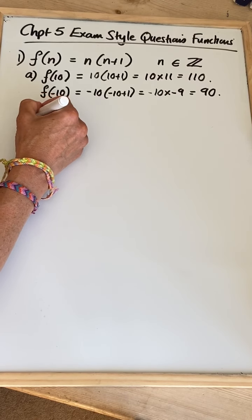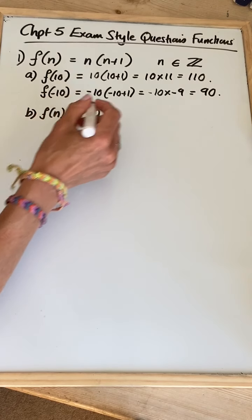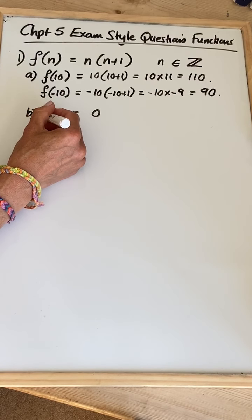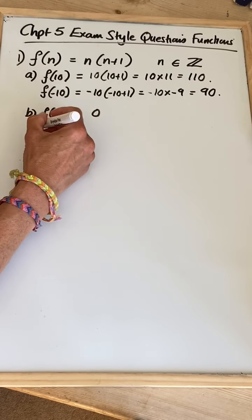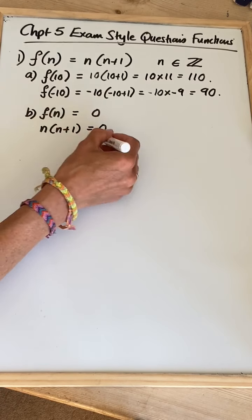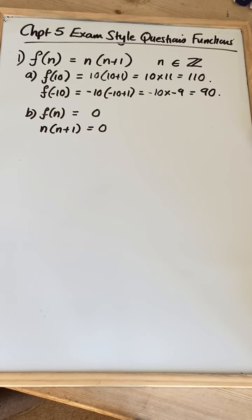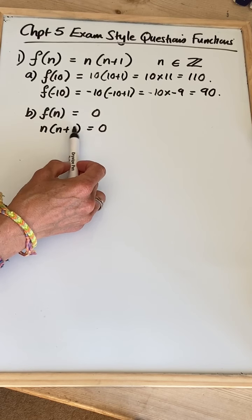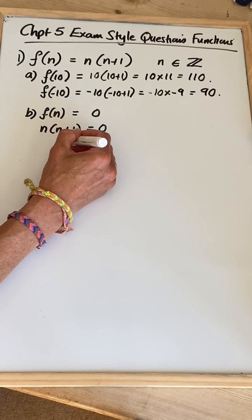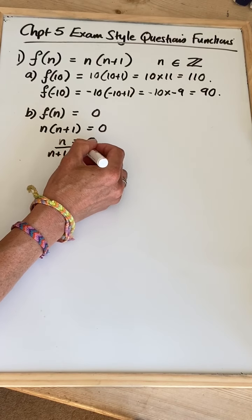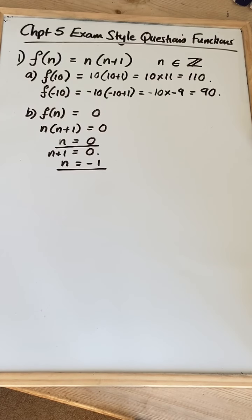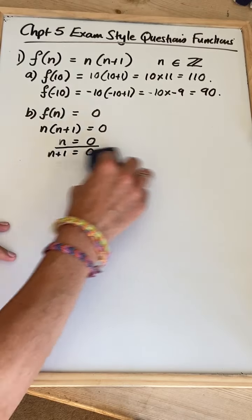The second part of the question is f of n equals something — in this case, it equals zero. Be careful when you get the notation for these questions. It is definitely saying that the function is equal to zero; it's not saying do f of zero. So we know that our function is n(n+1) equals zero. What you've actually got there is a quadratic that's already been factorised. So n equals zero is one solution, or n+1 equals zero, so the other solution is n equals minus 1.